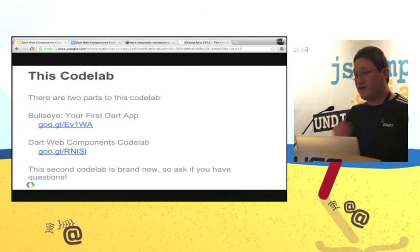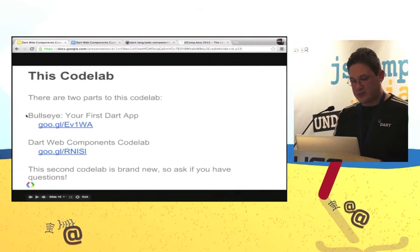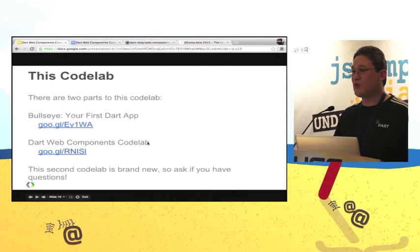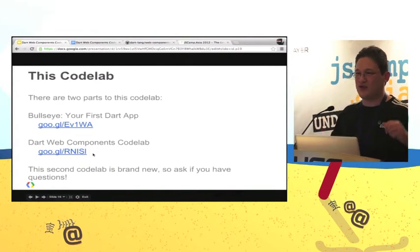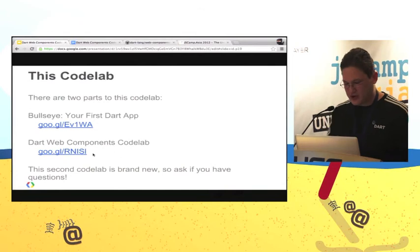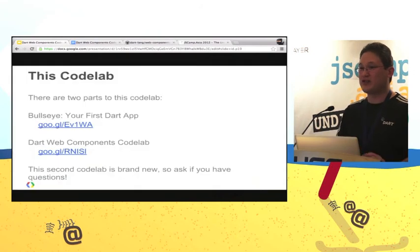There are two parts to this Code Lab. If you've never coded in Dart before, you want to start with the first Code Lab called Bullseye — 'Your First Dart App.' Once you get done with that, move on to the Dart Web Components Code Lab, which is the one I put so much time into lately. It will walk you through taking the first Code Lab and making it fully web components-based, doing the whole model-driven view thing. If you make it through this Code Lab — and it should not take you that long — you will have a fairly strong understanding.